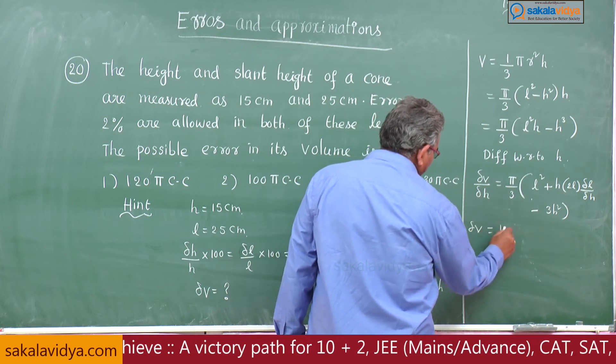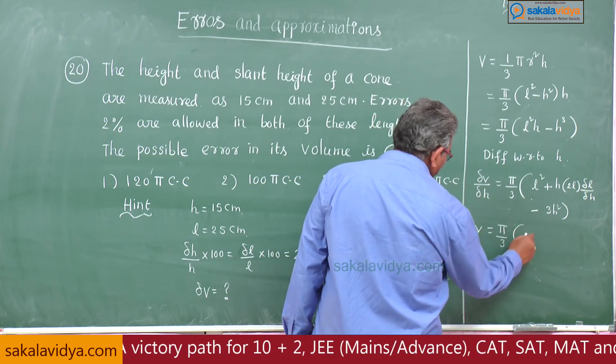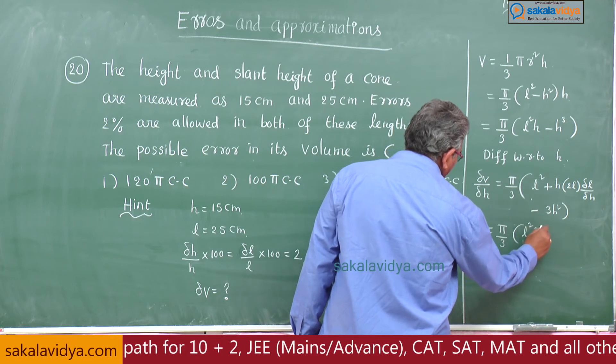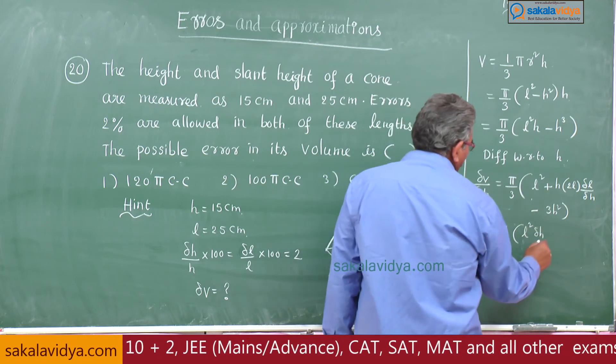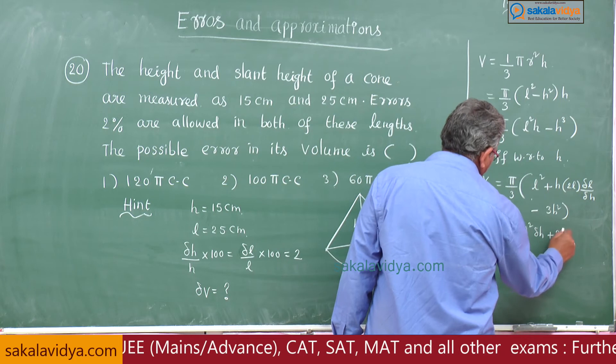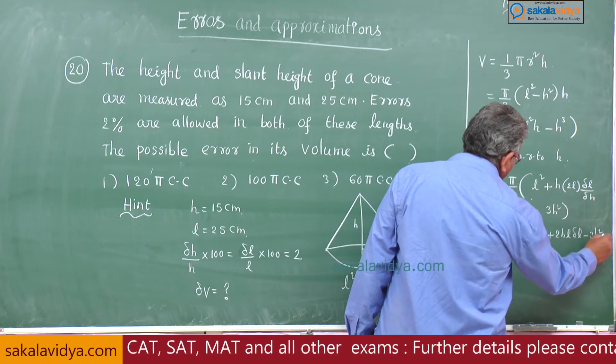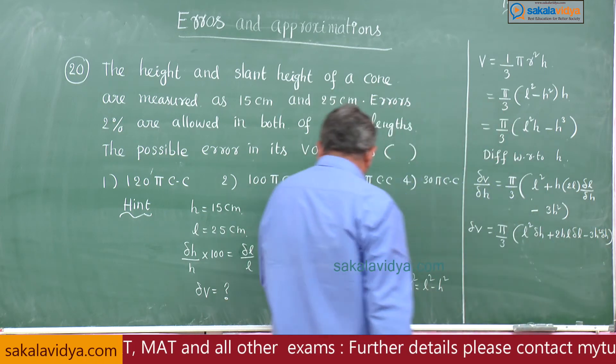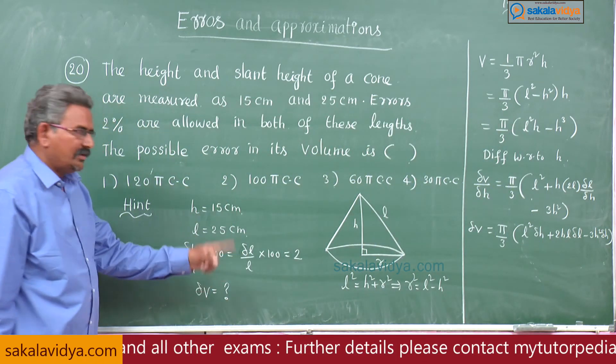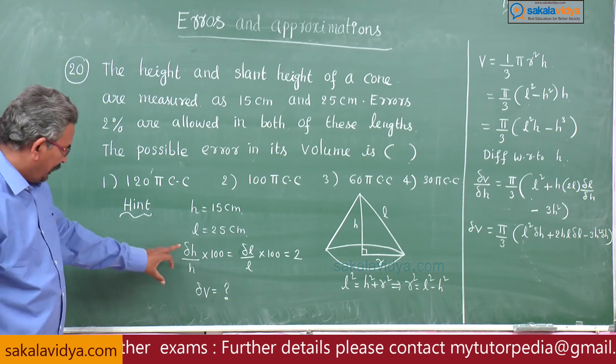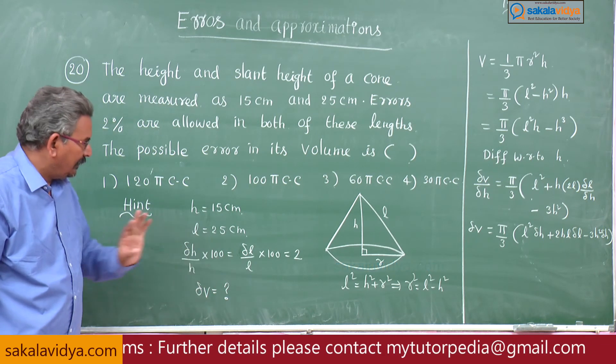Delta v equals π by 3 into l square delta h plus 2hl delta l minus 3h square delta h. From this condition we have to find out delta h value and delta l value.